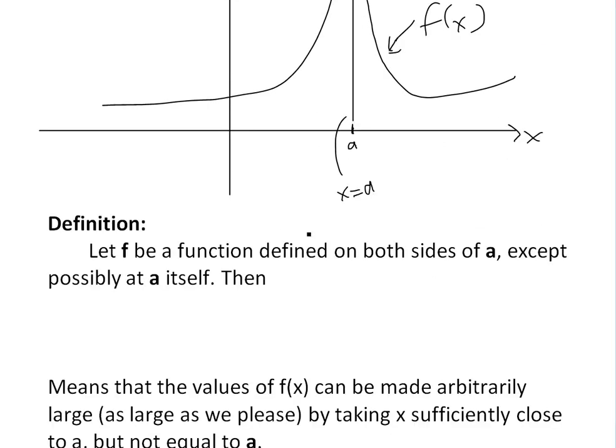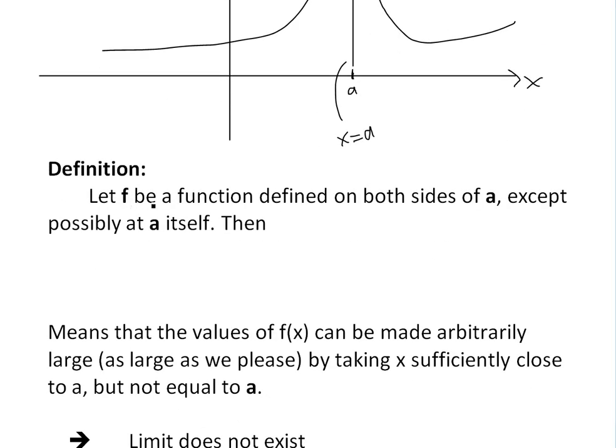The way you would write it in limit form: let f be a function defined on both sides of a, except possibly at a itself. It could be defined here. This could be f of a. It doesn't have to be, it doesn't have to exist.